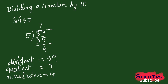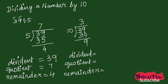Now let us divide the same number 39 by 10. You can see that 3 times 10 is 30, and the remainder will be 9. So here the dividend is 39, the quotient is 3, and the remainder is 9.